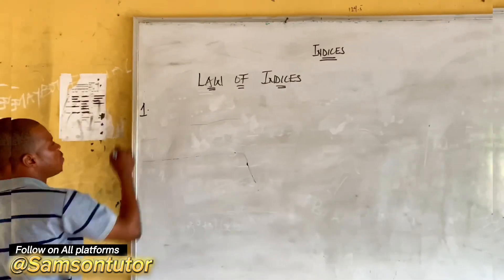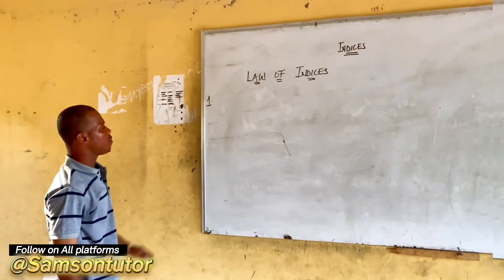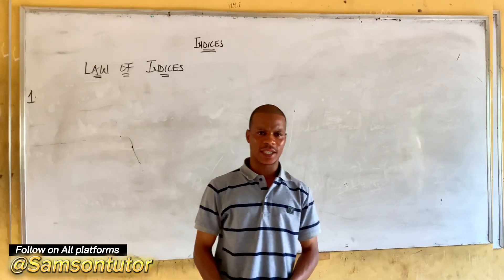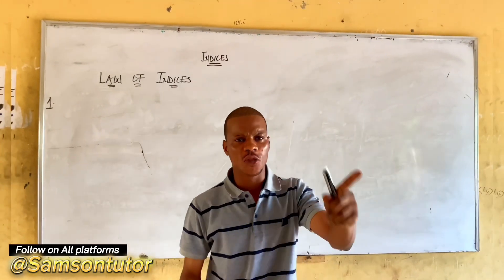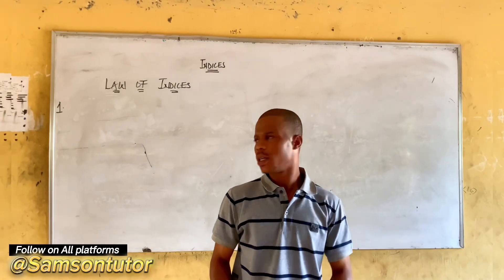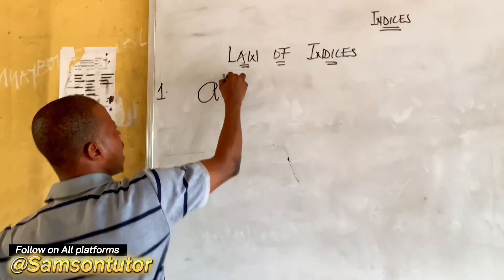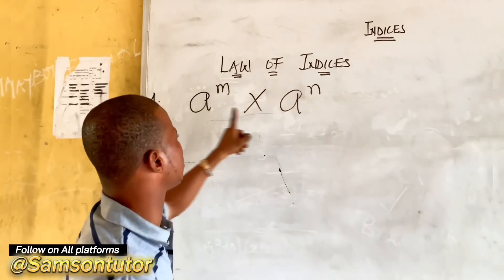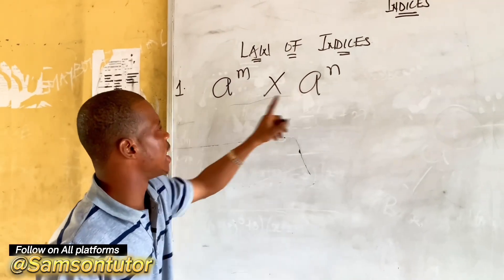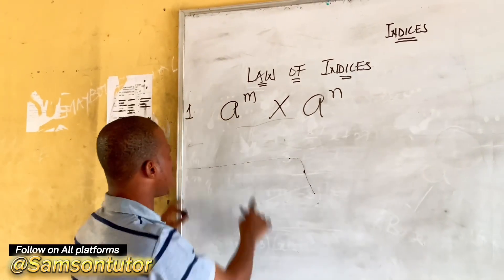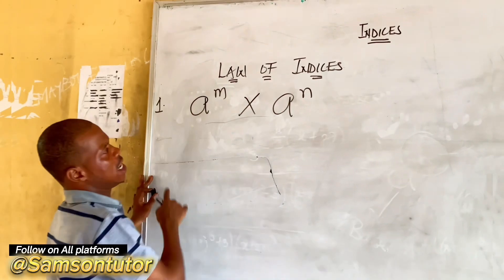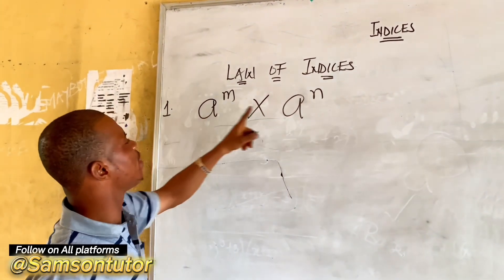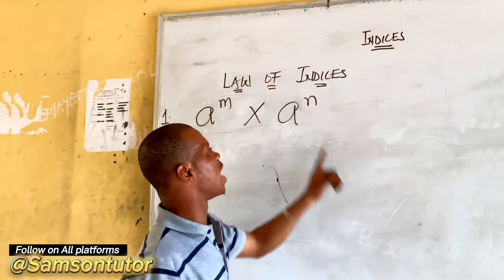We are going to start with the first law of indices. The first law says that whenever we have the same base multiplying each other, we take one of the bases and we add up the powers. For example, a raised to power m times a raised to power n — the bases are the same, so the first law applies.